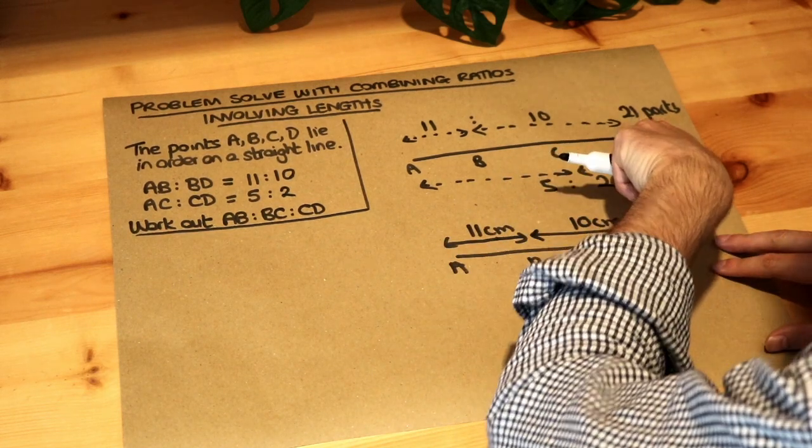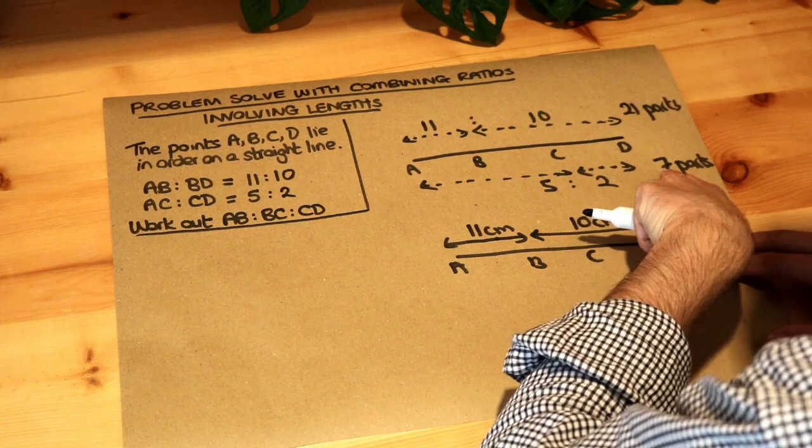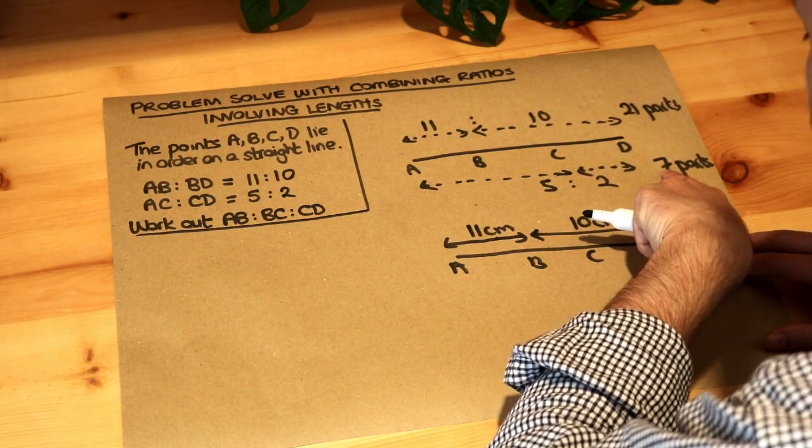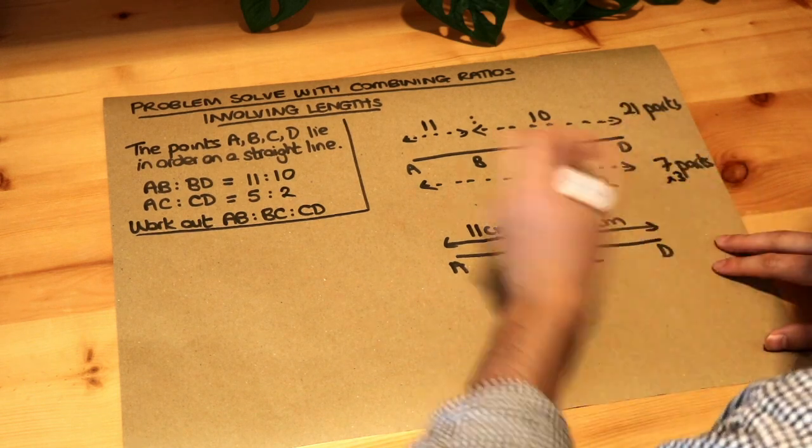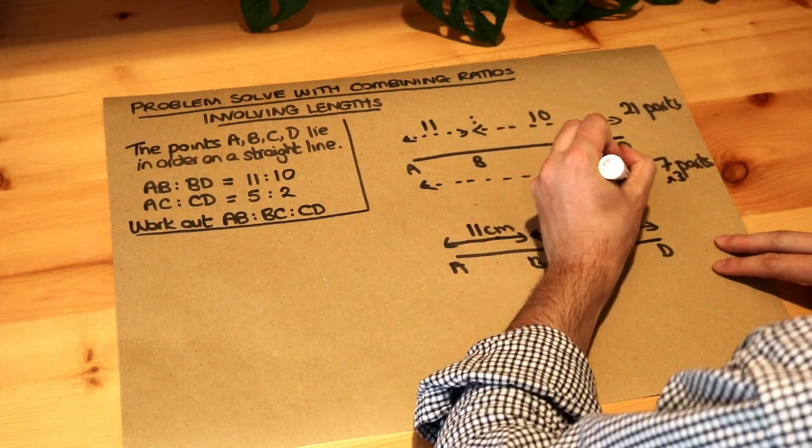So that total length would be 21 centimeters. And to make this 7 into 21 centimeters, we're going to multiply these each by 3. So multiply that by 3 to get to 21, multiply that by 3, multiply that by 3.